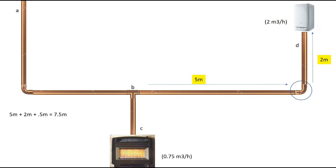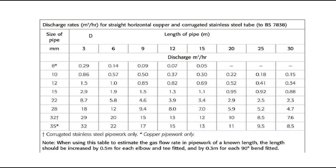Even though it's after the fire, you still carry out the same calculation — there are still two appliances on the system, so you still have to multiply by two. Seven point five times two equals 15 meters of pipe. We're looking for a pipe which will carry two meters cubed per hour through 15 meters, so we go to our chart. We've got 15 meters and we go down until we hit two meters cubed per hour — it's not there, so we take the nearest value above two meters cubed, which in this case is 3.4 meters cubed per hour.